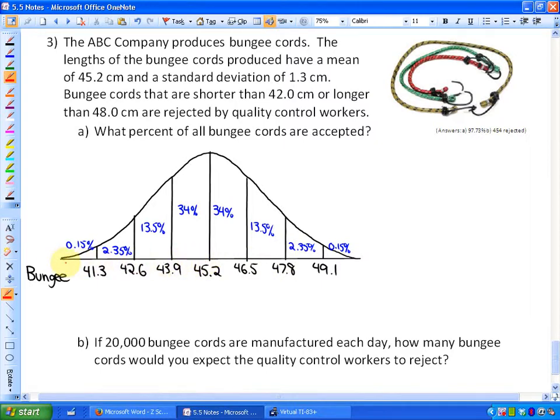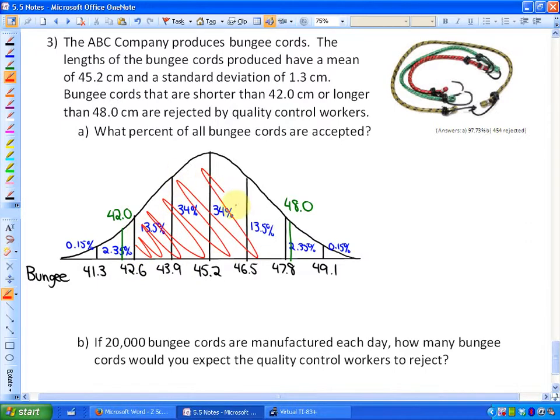Now, what I'm going to first of all do is estimate what I kind of think the answer is going to be. But the question states that bungee cords that are shorter than 42 cm, so 42 cm would roughly be here. And also bungee cords that are longer than 48 cm, which is roughly here, are rejected. So all of the lengths of bungee cords between those two lengths are accepted. So if I was to look at this and estimate, this entire area I know is 2 34s and 2 13.5s, so that would be roughly 95%.